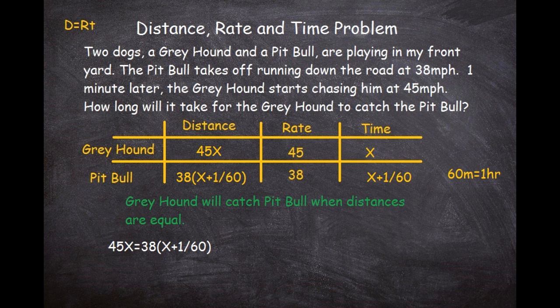Expanding the right side: 45x equals 38x plus 38 times 1/60, which is 38/60. So our equation is 45x = 38x + 38/60.